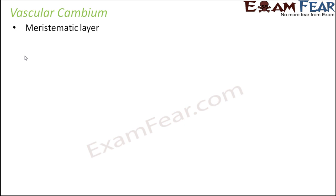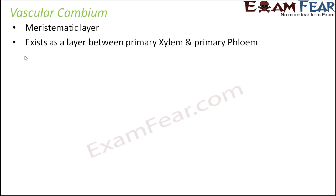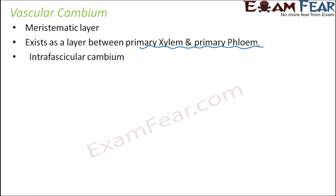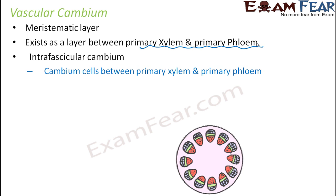Vascular cambium is a meristematic layer — it is capable of cell division and is going to give rise to many new cells. It exists as a layer between primary xylem and primary phloem, and that is why it is called vascular cambium, because it is present between the vascular tissues. It is also called intravascular cambium.